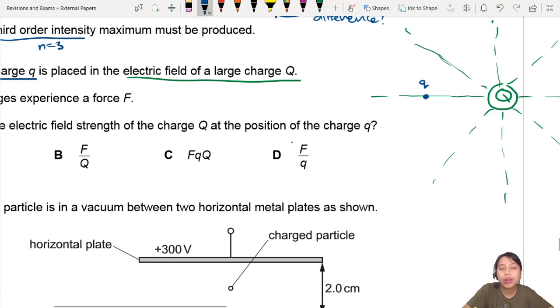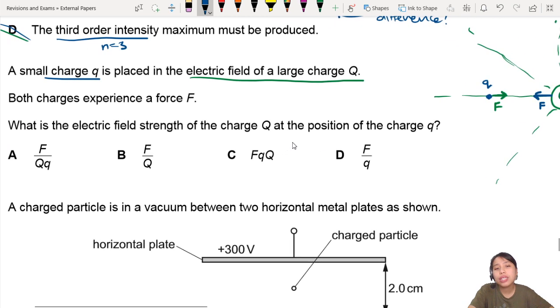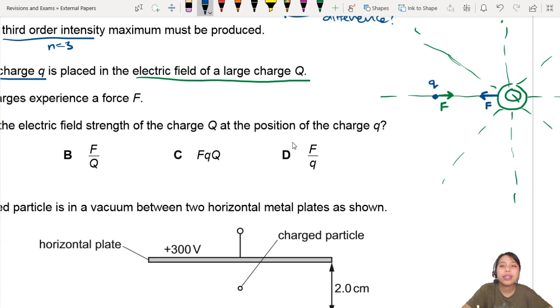Both charges experience a force on each other. So the big charge will, I guess, pull or attract, let's assume it's going to attract, attract charge q. But at the same time, small charge q is going to attract the big charge Q. Same magnitude. That's what we're talking about. But they're asking us, what is the electric field strength of charge Q at the small q? So electric field strength of charge Q is what we're looking for. How would you find electric field strength? You know the equation F equals QE, the general equation? Let's use that.